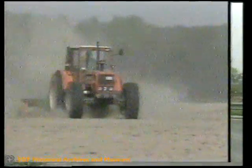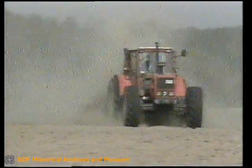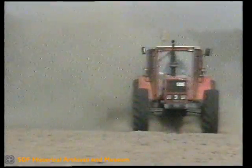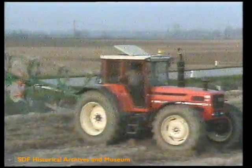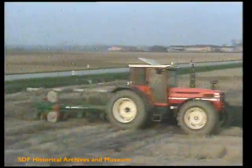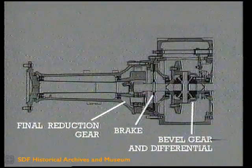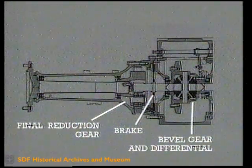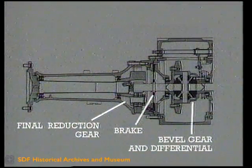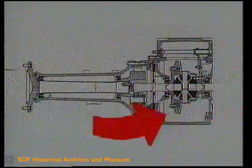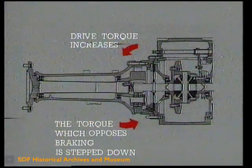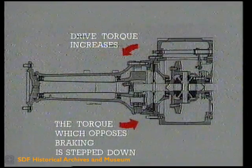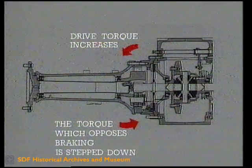The braking system must contribute to the maneuverability of the tractor via differential braking on the wheels on a single side, so as to reduce the turning radius. Because service life and efficiency are essential, the brakes are located upstream from the final reduction gear. By braking on the high-speed shafts, a reduced braking moment is exerted. Like the bevel gear to the wheels, the drive torque increases via the final reduction gear, so that inversely, the moment which the wheels oppose to the braking action is scaled down by the final reduction gear.